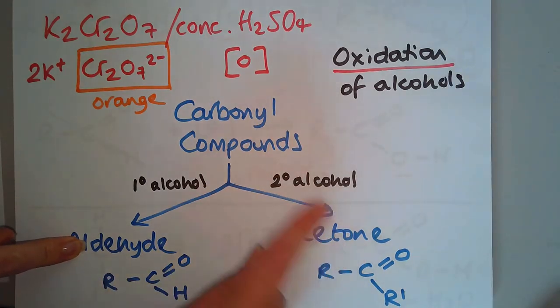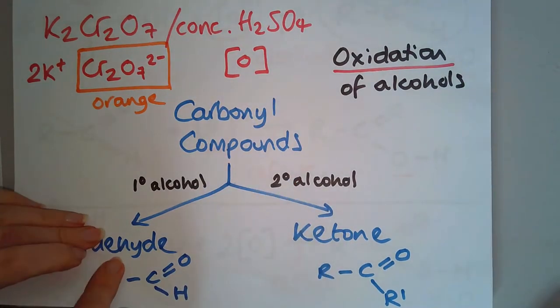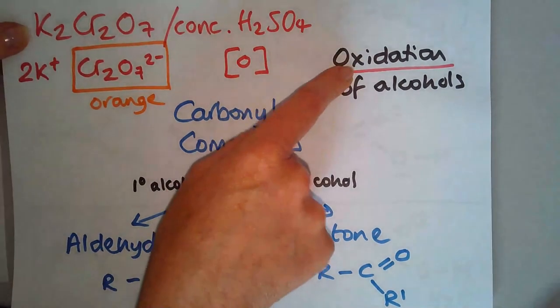We've done this one. Let's have a look at the ketone then. For a ketone, we need to start with a secondary alcohol instead. We're still going to use the oxidizing agent.